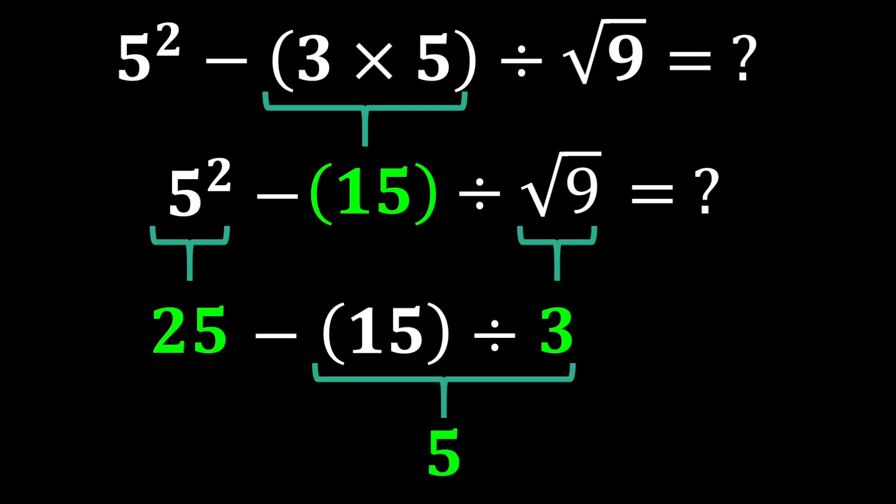Division has a higher priority than subtraction, so we first perform 15 divided by 3, which is 5, and then 25 minus 5 gives us 20. The final answer is 20.